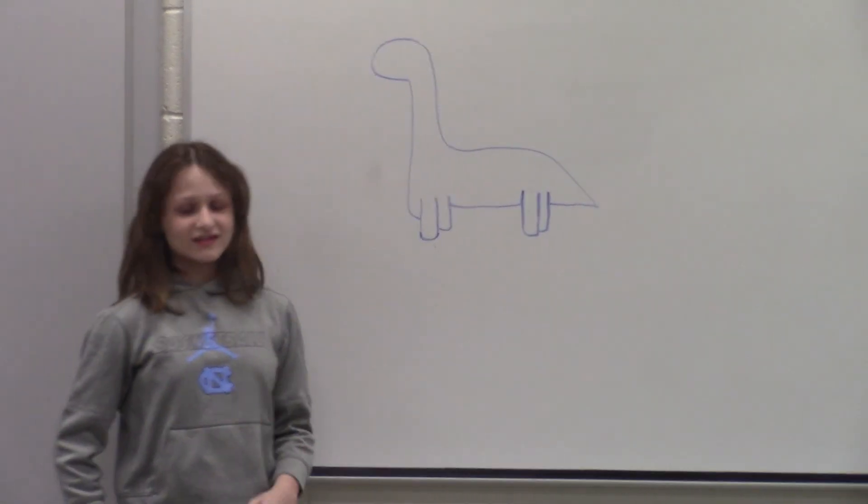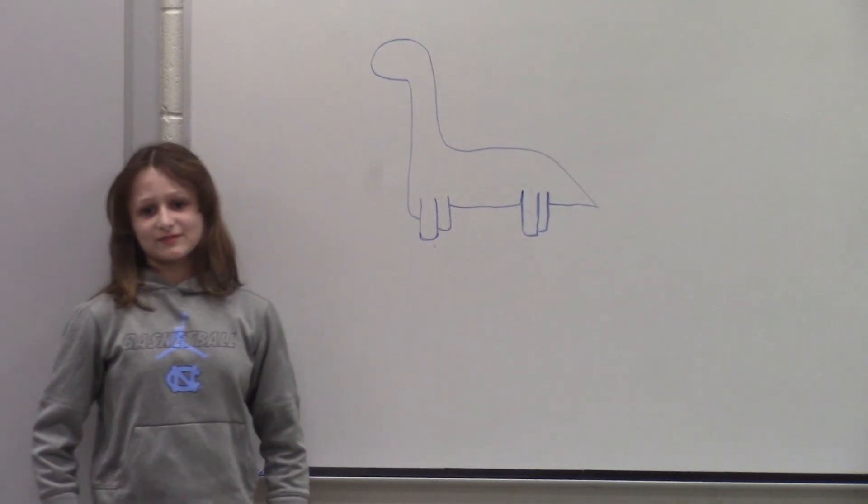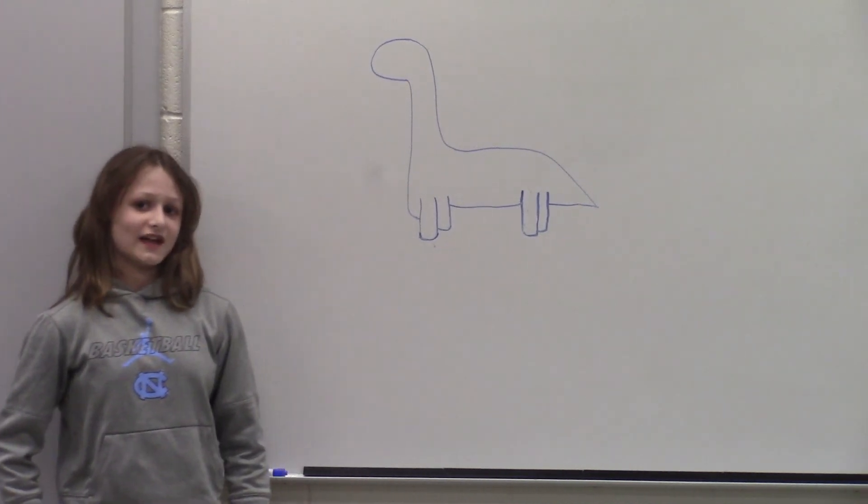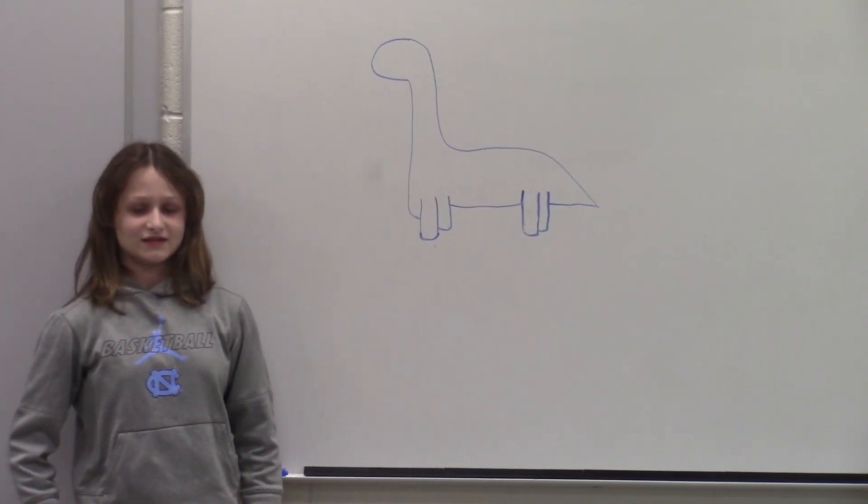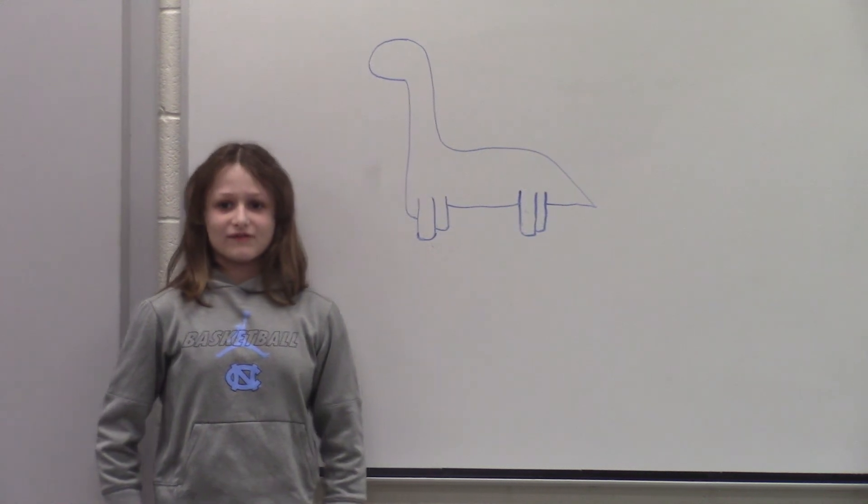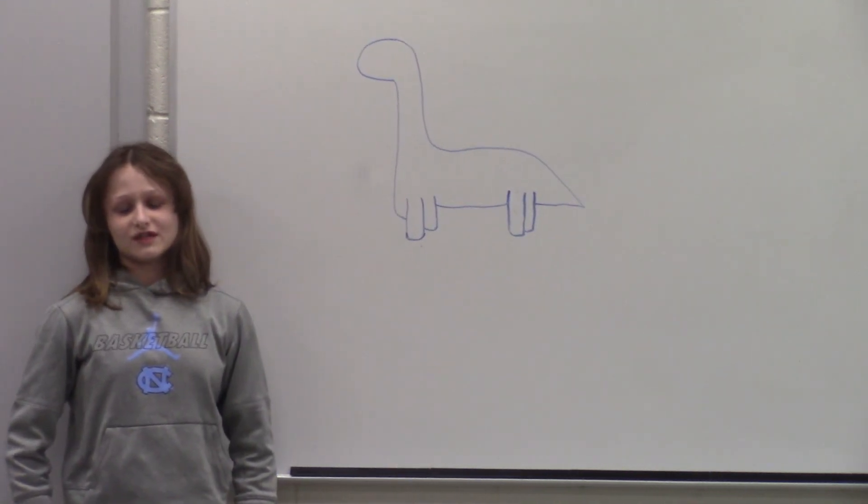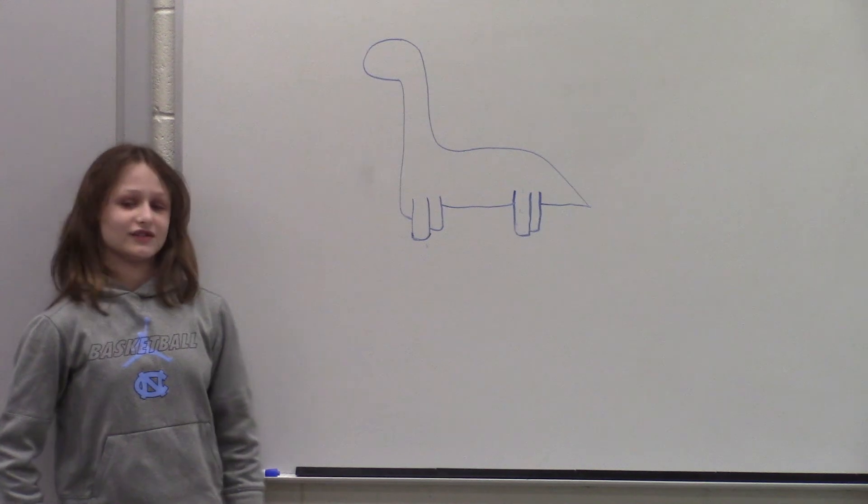So, in conclusion, a dinosaur is a very simple thing to draw. It includes a head, a tail, a body, and legs. If you're ever in a situation where you need or want to draw a dinosaur, this is how you draw it.